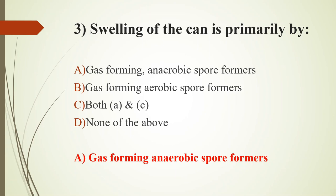Anaerobic spore-forming bacteria — Clostridium botulinum and Clostridium perfringens — are the most lethal foodborne microorganisms. For option B, gas-forming aerobic spore formers in milk belong to the genus Bacillus, especially Bacillus subtilis, Bacillus circulans, Bacillus pumilus, and Bacillus licheniformis.